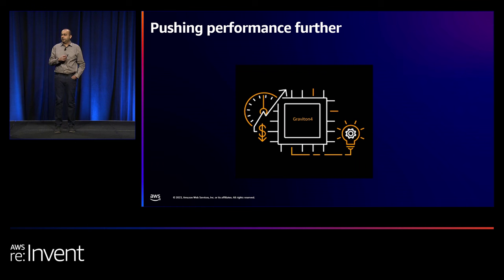Looking across all generations from the A1 instance in 2018 through Graviton 2 in 2019, Graviton 3 in 2021, and Graviton 4 in 2023, you see almost 4x or more than 4x increase in performance across four generations in five years. The eighth-generation EC2 instances powered by Graviton 4 offer up to 3x larger instance sizes, DDR5-5600, the best price performance in EC2, and substantial energy savings.